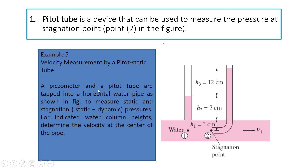The problem: the Pitot meter and the Pitot tube are tapped into a horizontal water pipe as shown in the figure. We have a pipe and we have the Pitot meter and Pitot tube connected to the pipe to measure static and stagnation pressure. For the indicated water column height, determine the velocity at the center of the pipe. We want to find the velocity V1. It's very easy — since the Pitot tube is part of the Bernoulli equation, we're going to use the Bernoulli equation.